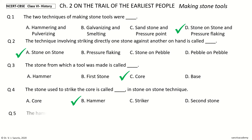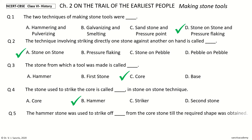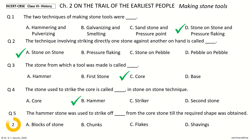Question 5: The hammer stone was used to strike off dash from the core stone till the required shape was obtained. The options are: blocks of stone, chunks, flakes, shavings. And the answer is flakes.